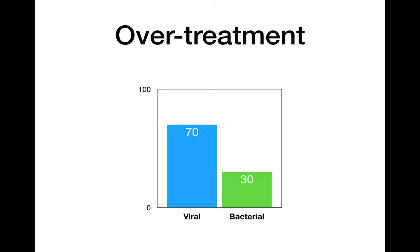Some common pitfalls. The most common pitfall in the management of streptococcal pharyngitis is overtreatment. As you can see, 70% of cases of pharyngitis are going to be viral, whereas only 30% are bacterial.